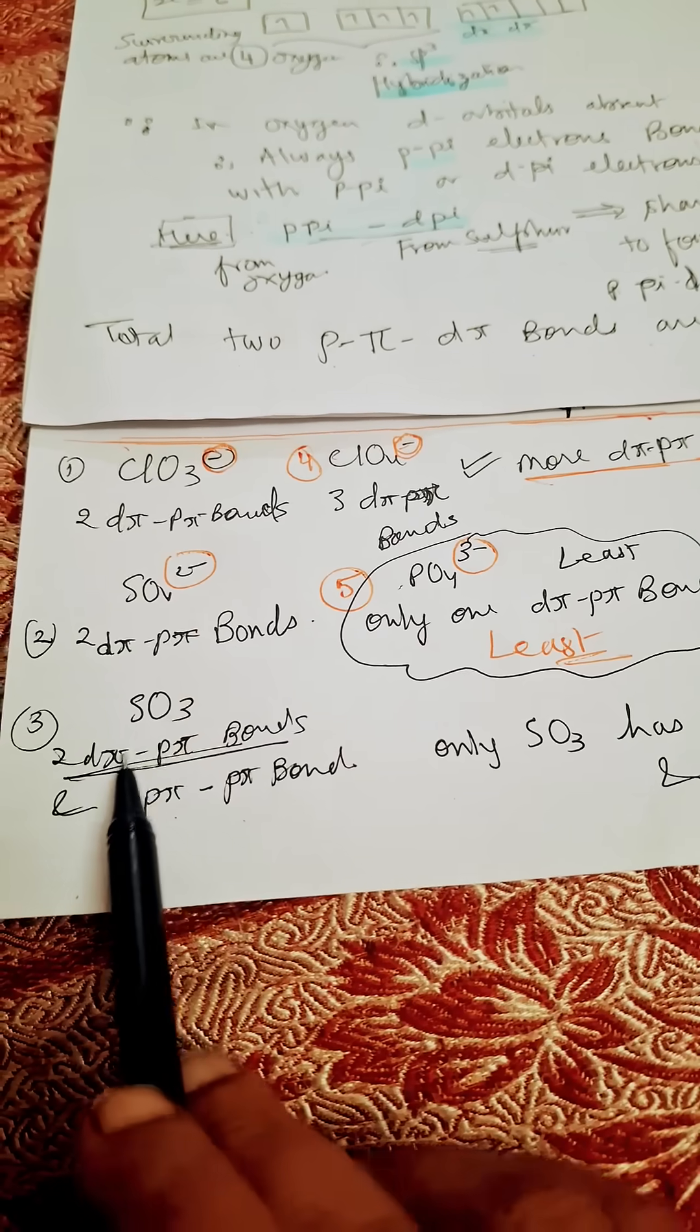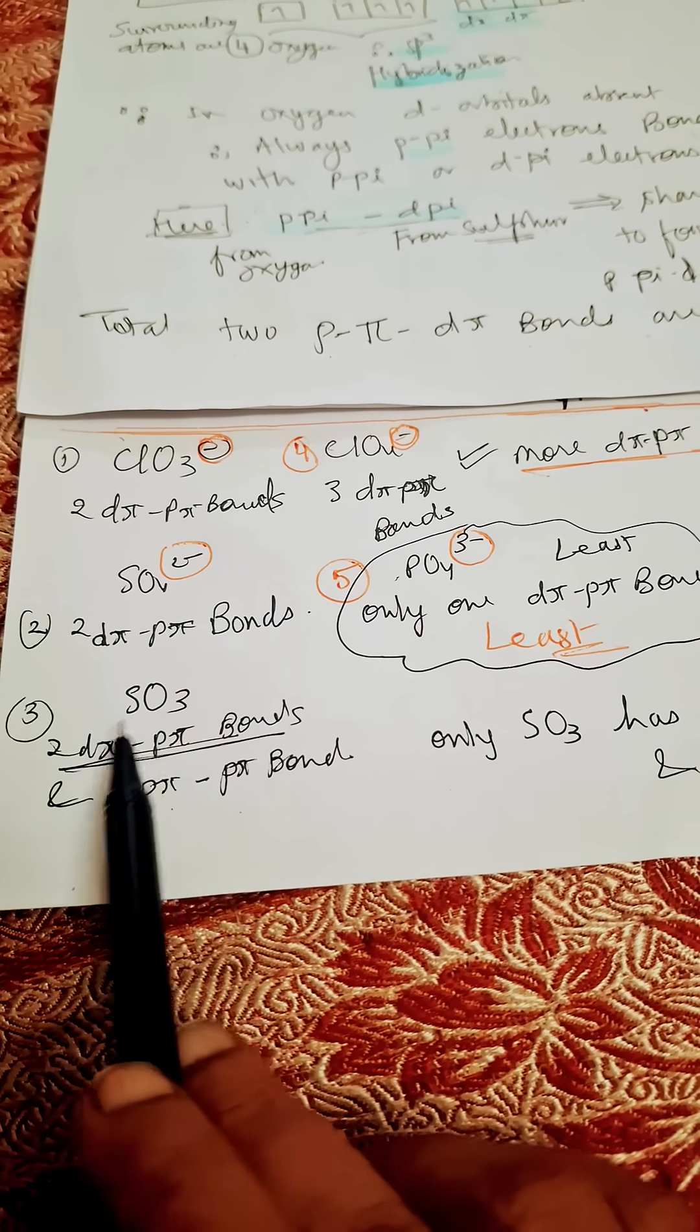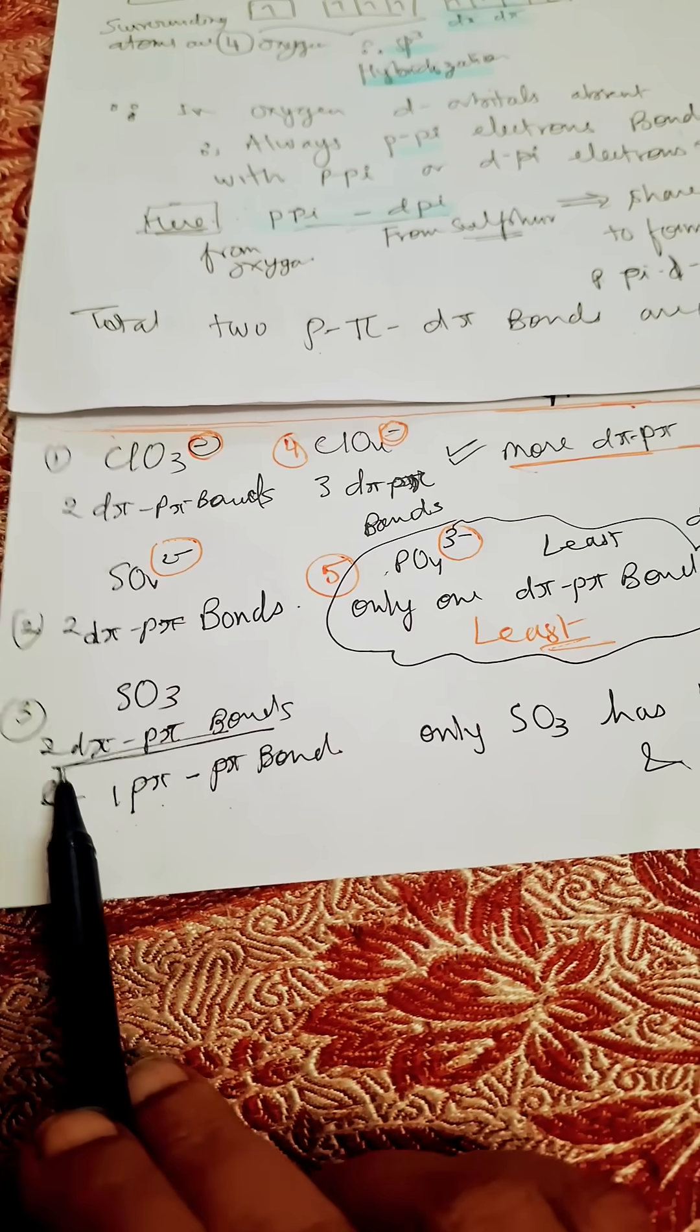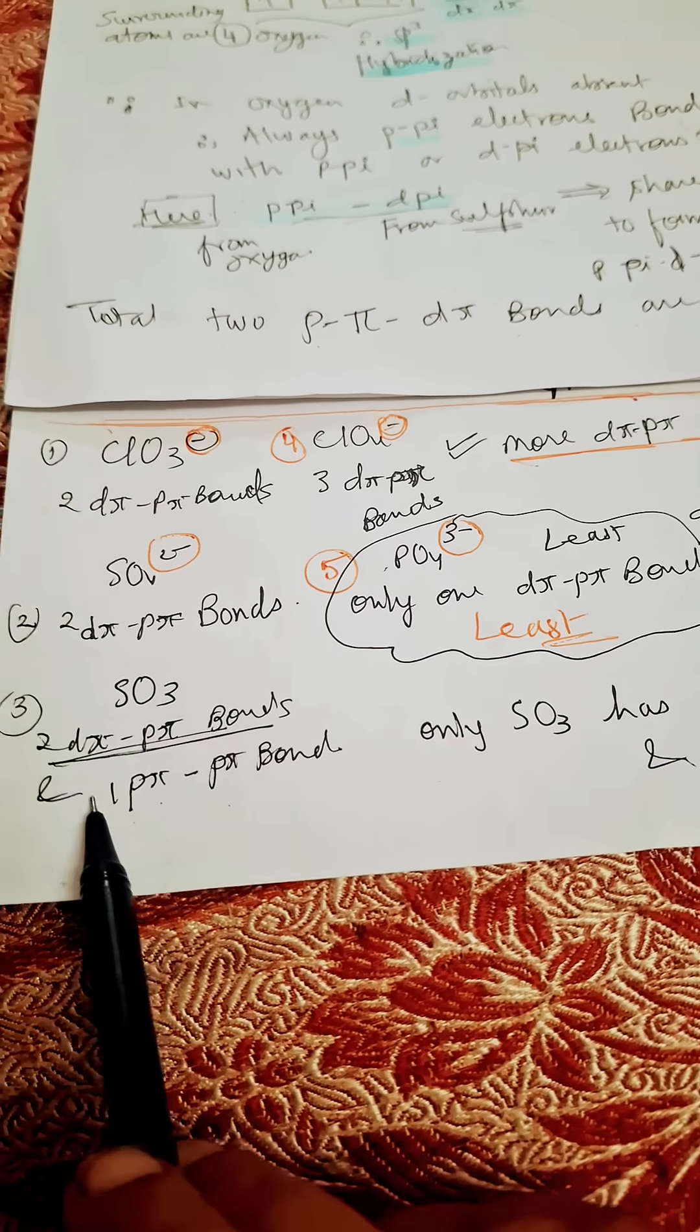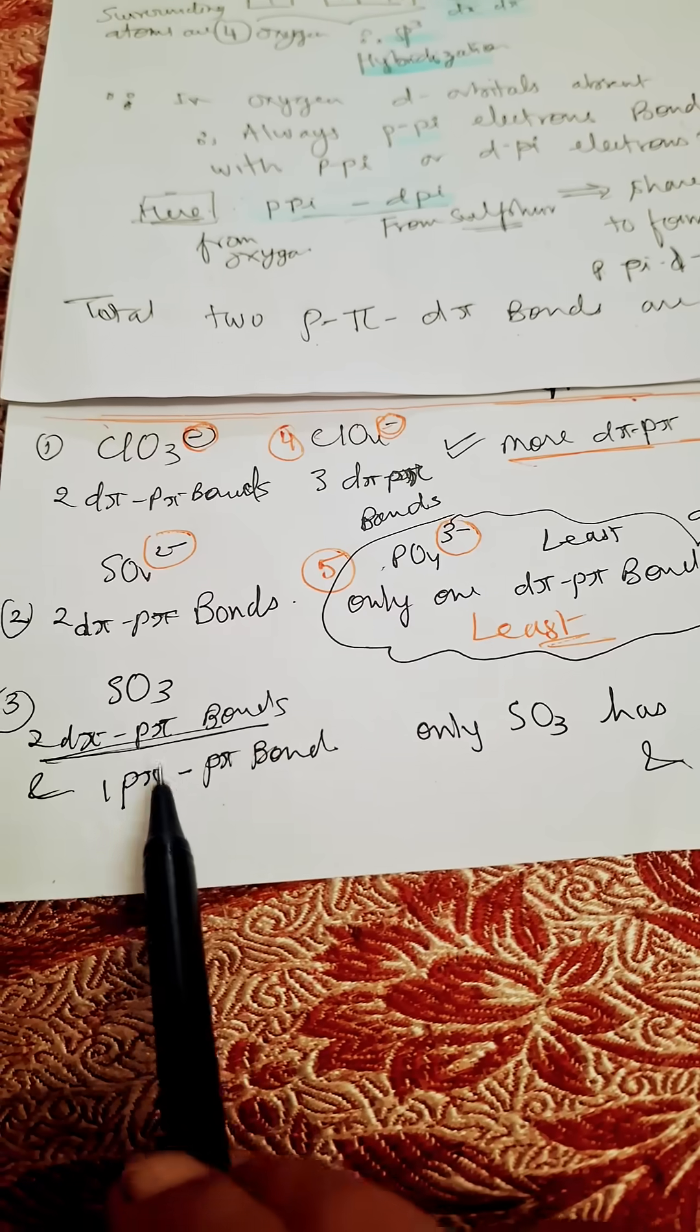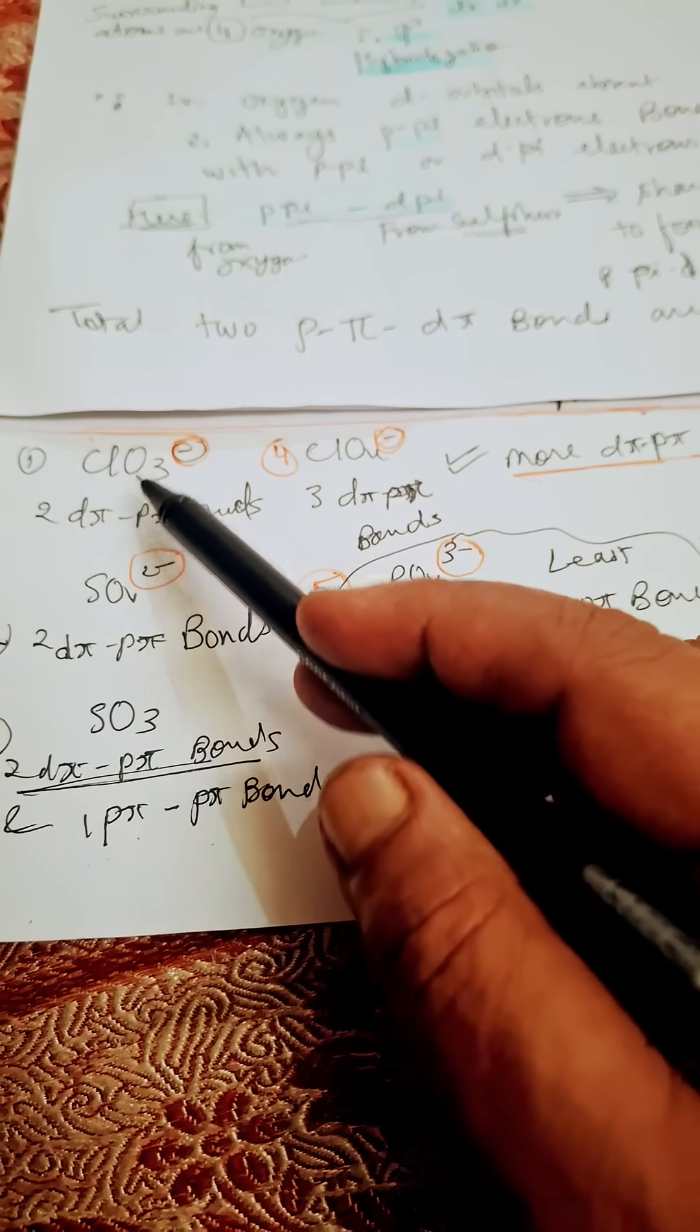Sulfur trioxide gas - it is also having two d-pi p-pi bonds along with one p-pi p-pi bond. This is additional in this, okay? So two d-pi p-pi...